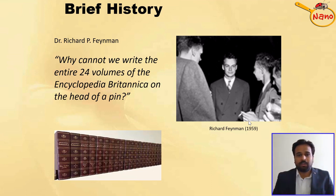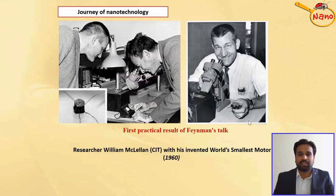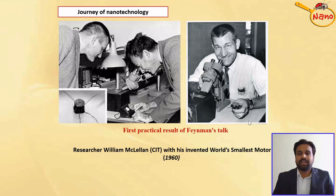In that same conference, he discussed controlling and manipulating atoms and molecules at the atomic scale. He also offered a prize for the person who could reduce the size of the Encyclopedia to a readable miniature size, and the same prize for the person who could build an electric motor of comparably very small size. A researcher named William McLellan from the California Institute of Technology in 1960 developed the world's smallest electric motor using a microscope, and this was the first practical demonstration of Feynman's talk.